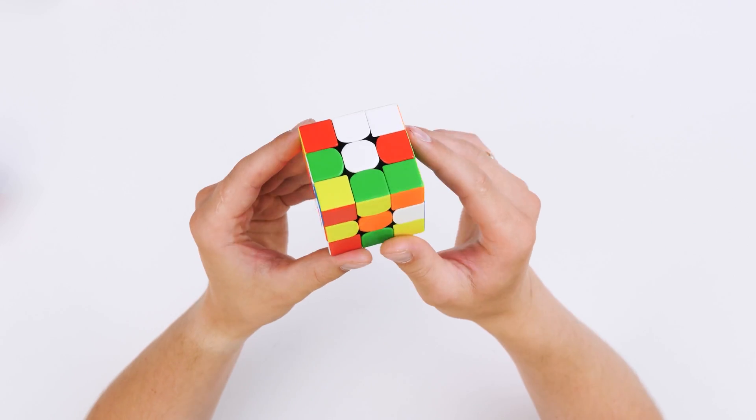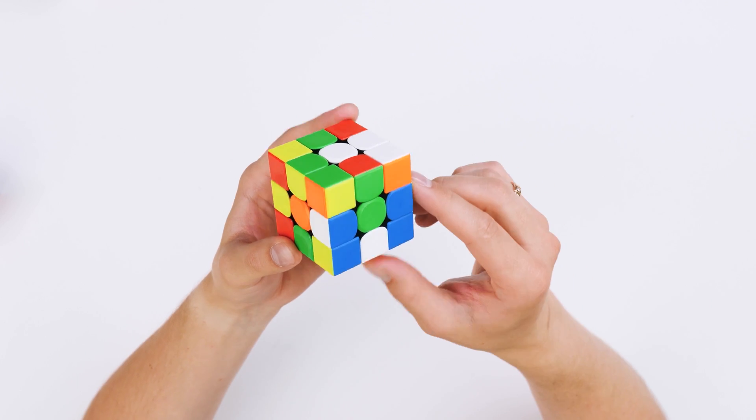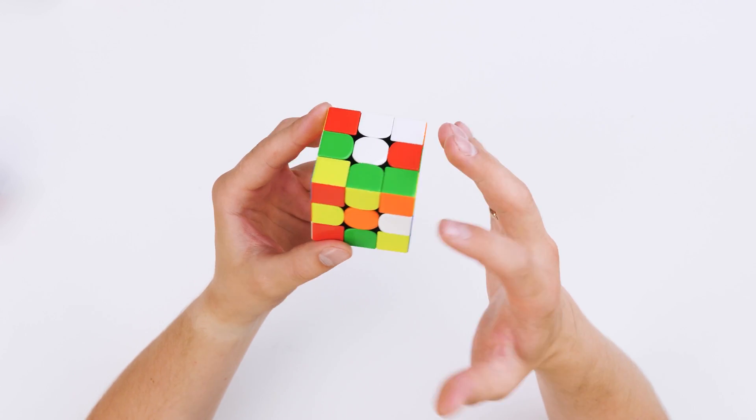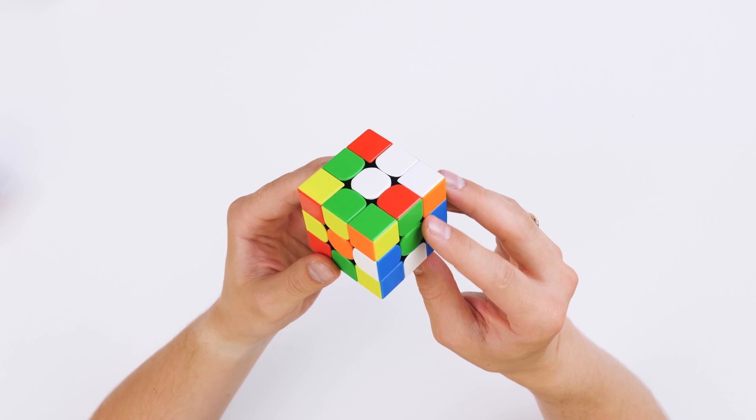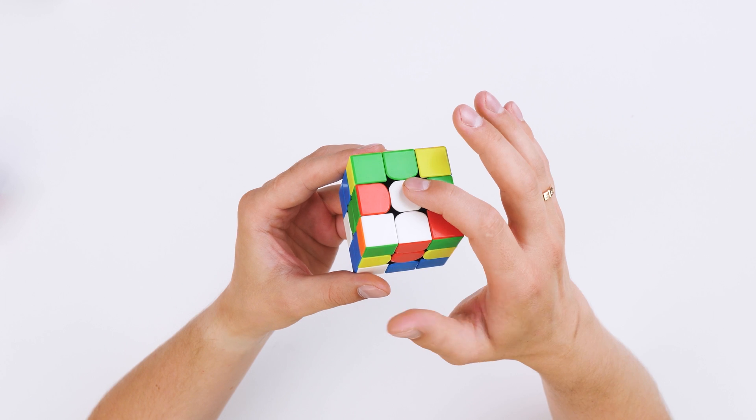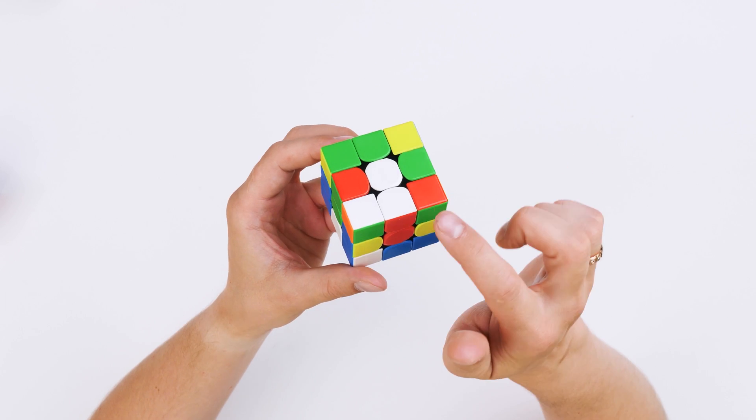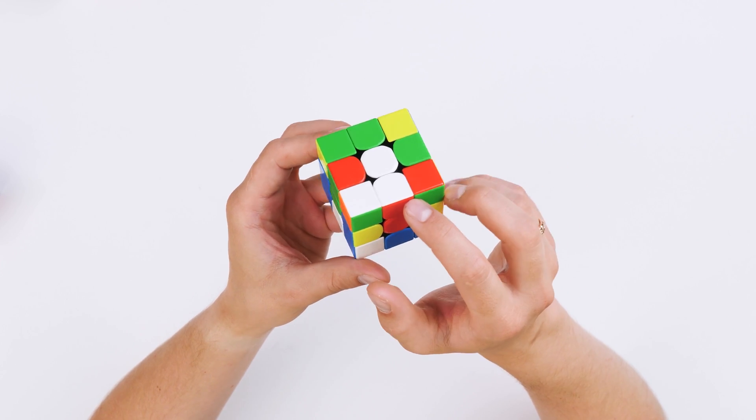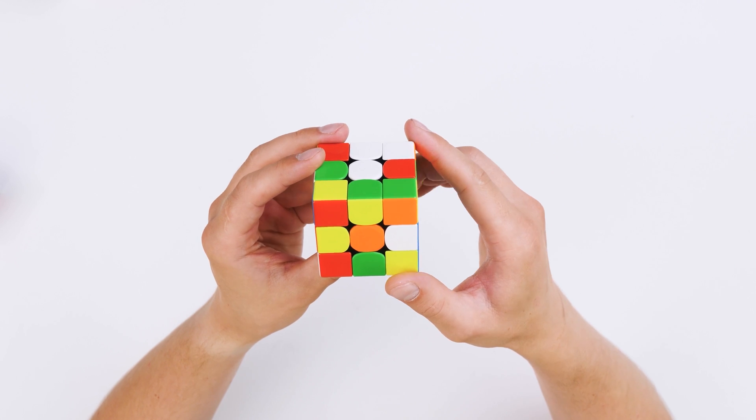For example, we have such a situation. I want to repeat once again that the edges may be anywhere on the cube. But we start with the ones on top, next to the white center. You don't even need to do anything with them, they are already standing in the right place.